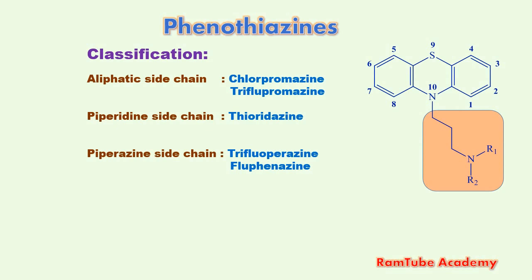The last type is piperazine side chain-containing molecules — for example, triflupromazine and fluphenazine. The structures of all these molecules are discussed at the end of the video, so watch the video till the end to learn the most from this tutorial.